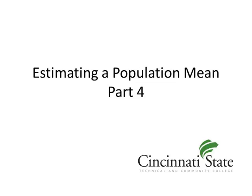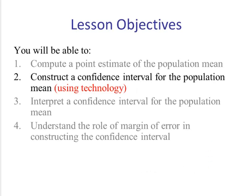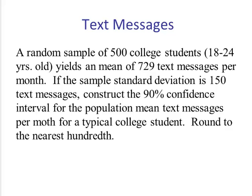Confidence intervals for a population mean. Let's construct a confidence interval for a population mean using technology. We will look at Minitab, StatCrunch, and the TI-84. We'll begin with the example involving text messages. This is an example that we did in a previous video. We're asked to construct a 90% confidence interval for the population mean text messages per month for a typical college student.